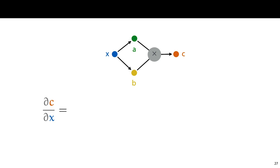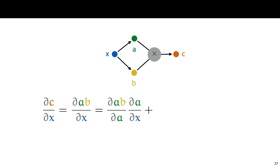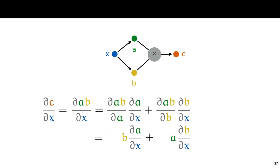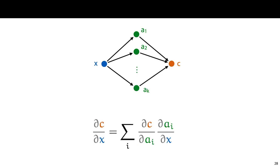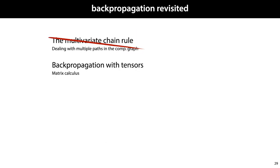The multivariate chain rule can be used to derive many rules for derivatives you should already know. For instance, if we make c the product of a and b, applying the multivariate chain rule gives us two paths over the computation graph — one through a and one through b. The path through a gives the derivative of a times b over a times that of a over x, treating b as a constant, plus the derivative of a times b over b times that of b over x, treating a as a constant. The first term yields b and the second yields a, which leads to the product rule. If c has more than two inputs, the multivariate chain rule tells us to sum over all of them. With that, we know how to apply the chain rule to any kind of computation graph.